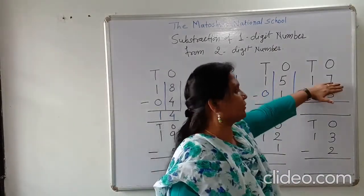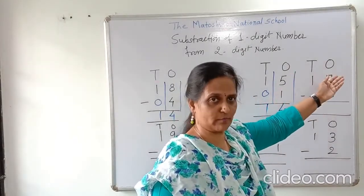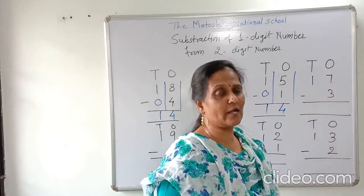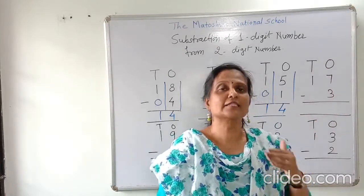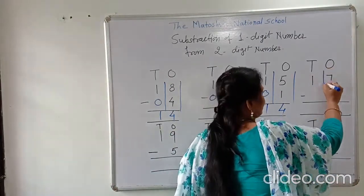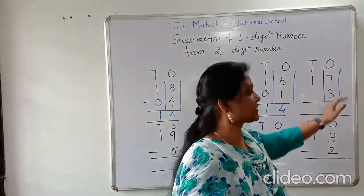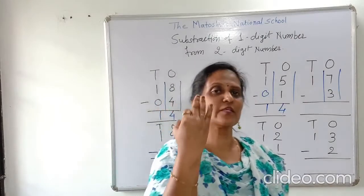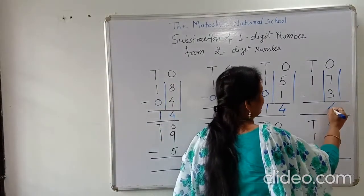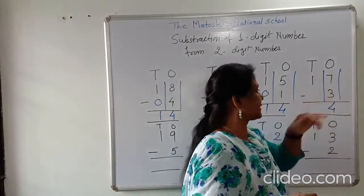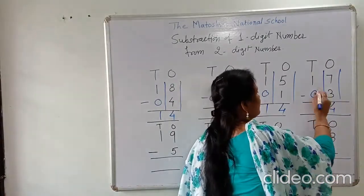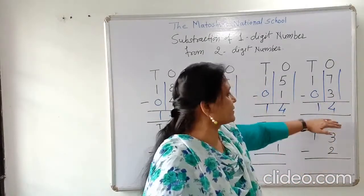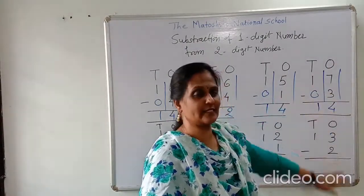You can see here, 17 — I write one in tens place and seven in ones place. Here is a three, a single digit number, so I write it in ones place under this seven. First we have to subtract three from seven. Let's count after three up to seven: three, four, five, six, seven — four numbers. So I write here four. Seven minus three, answer is four. In tens place, one minus zero is one. So answer is fourteen. Seventeen minus three, answer is fourteen.